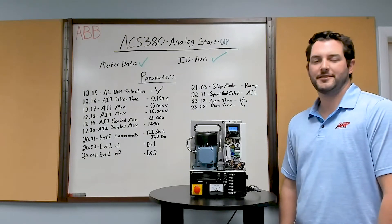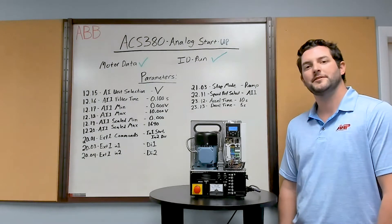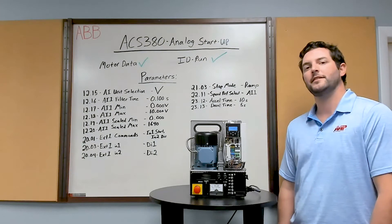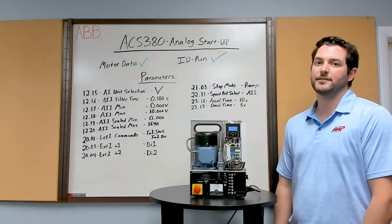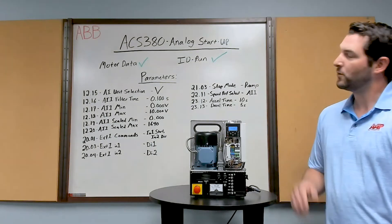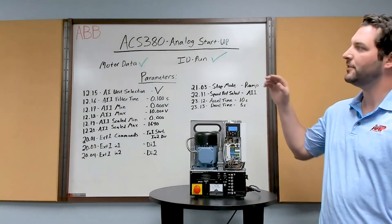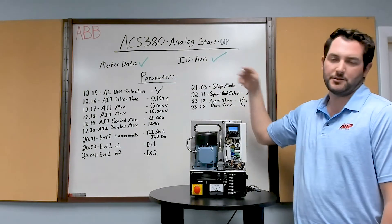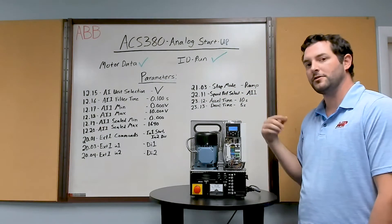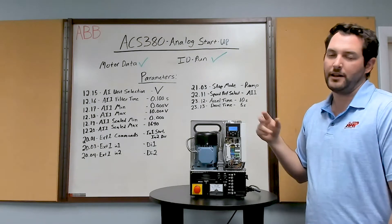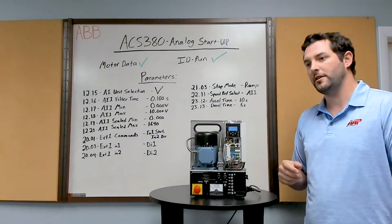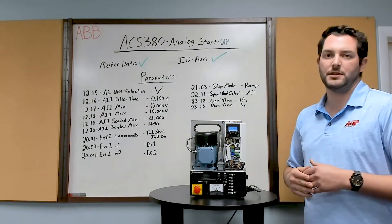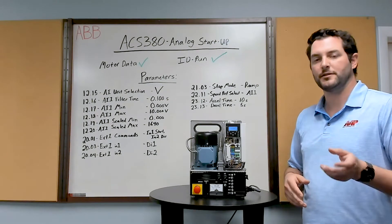Hey everyone, thanks again for joining us. I'm Andrew Hendozak with AAP Automation, Applications Engineer, and we're going to do another ACS 380 demo setting up analog startup. We've done two videos in the past, so we're assuming you've already entered your motor data and done the ID run. The motor has been spinning and you can control it from the control panel — now we just want to add on an analog input, so if you want control from a different area by the machine, you can use an analog input signal to control the speed.